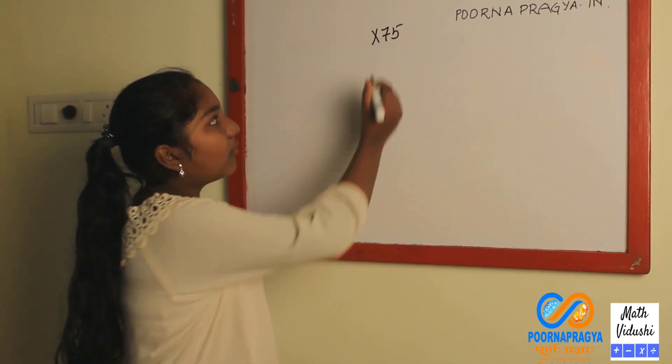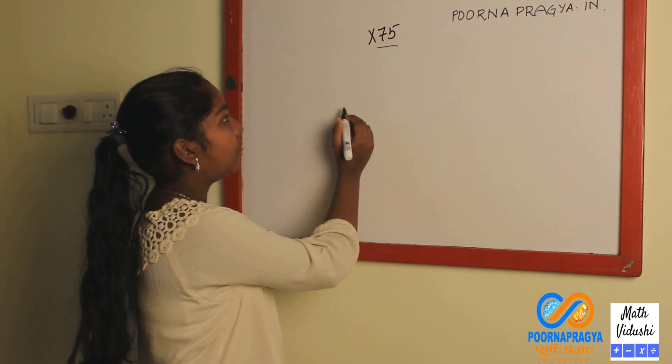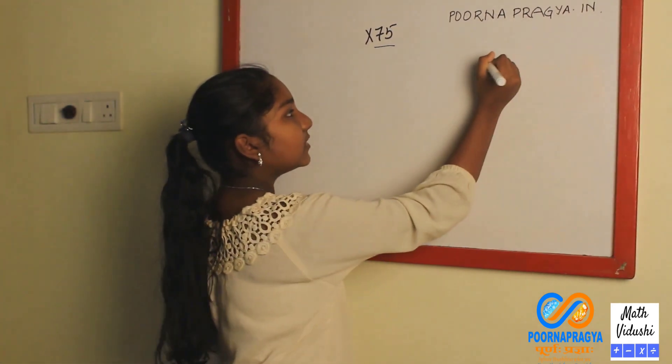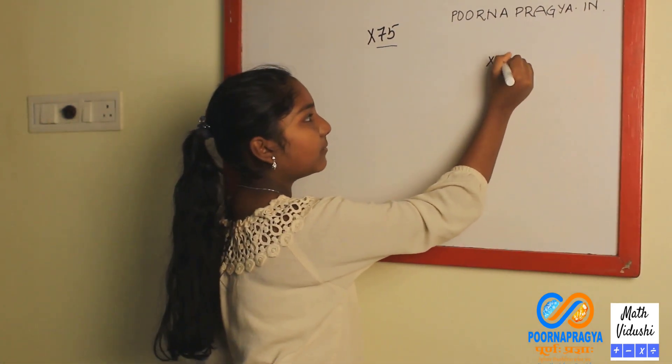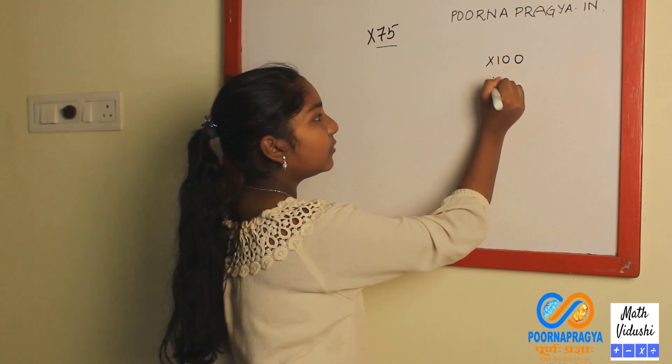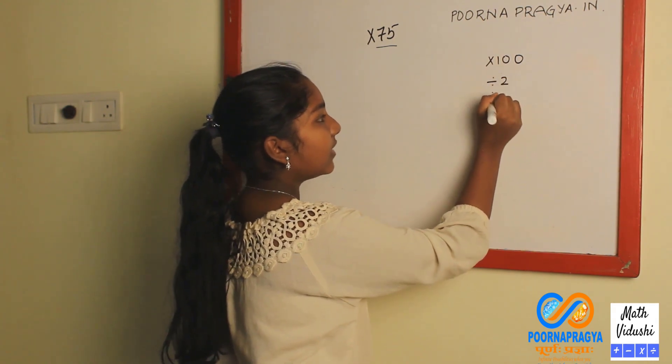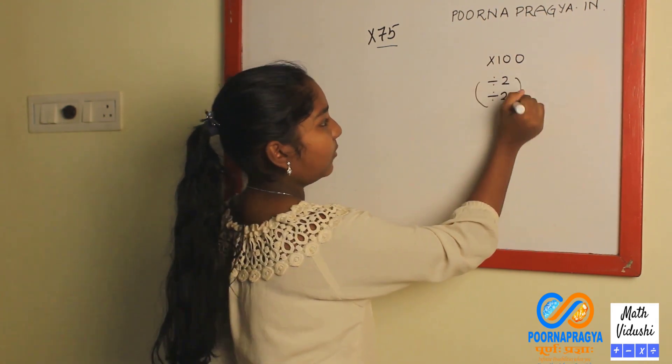Hi, we are going to learn how to multiply by 75. The trick for this is to first multiply the number with 100, divide it by 2 and again divide it by 2 and add these both.